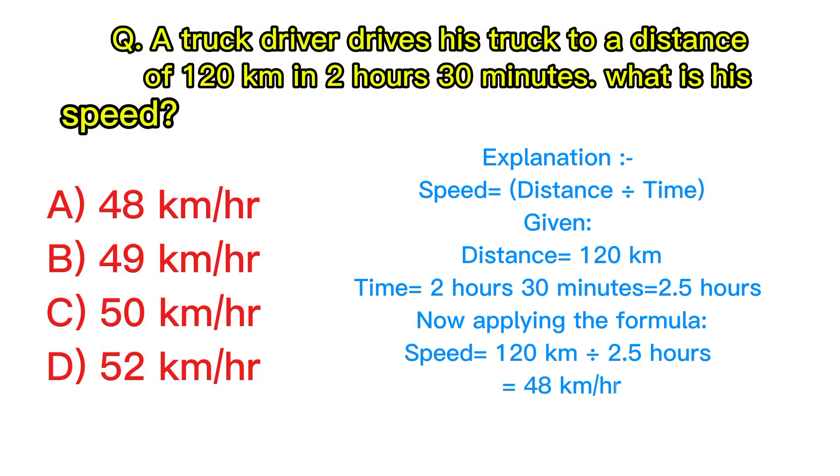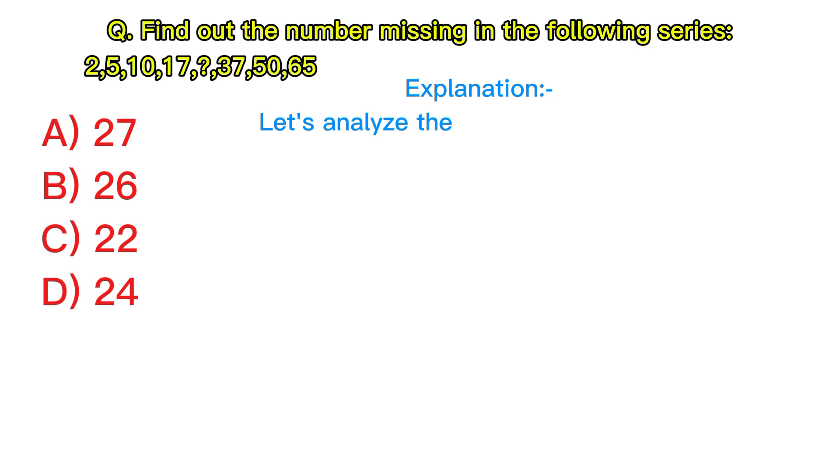Find out the number missing in the following series: 2, 5, 10, 17, ?, 37, 50, 65. Explanation: Let's analyze the pattern in the series. 5 minus 2 equals 3, 10 minus 5 equals 5, 17 minus 10 equals 7, 26 minus 17 equals 9, 37 minus 26 equals 11, 50 minus 37 equals 13, 65 minus 50 equals 15. Answer: B, 26.